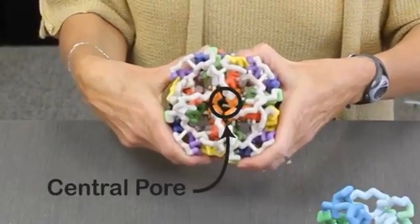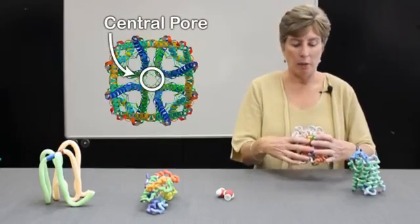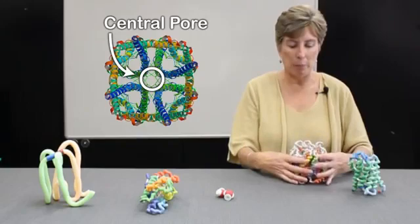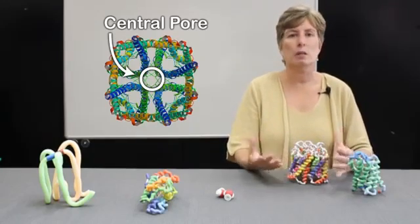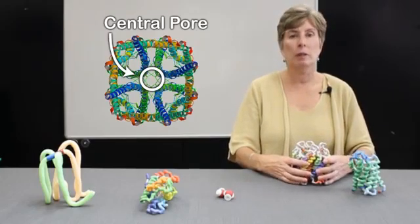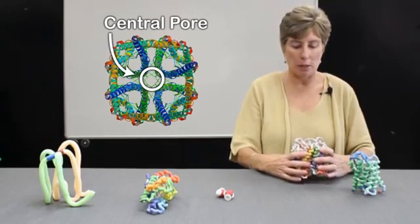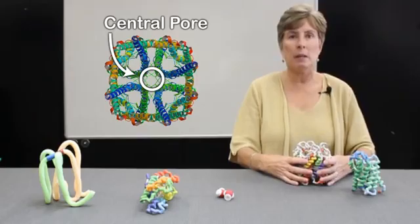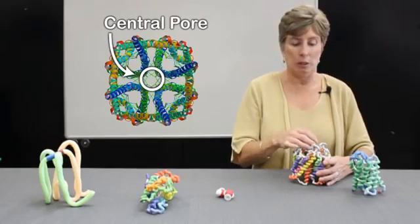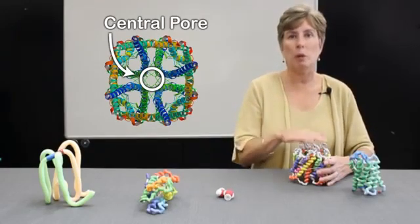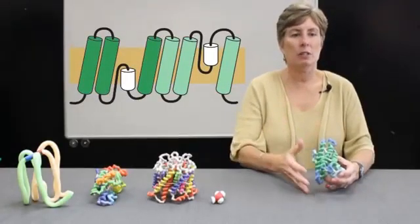There's a lot of controversy around this, though, because some people think that it's just plugged up and doesn't really act as a pore—it doesn't really do anything. Whereas other people feel like it is an actual ion channel. They have data to show that it allows ions to pass, and they say that it's gated. They say that these loops up here are somehow involved in indicating when the pore will be open and when it will be closed.